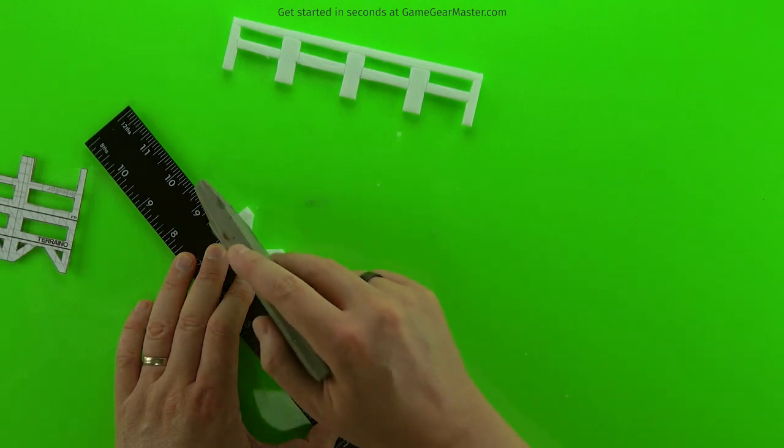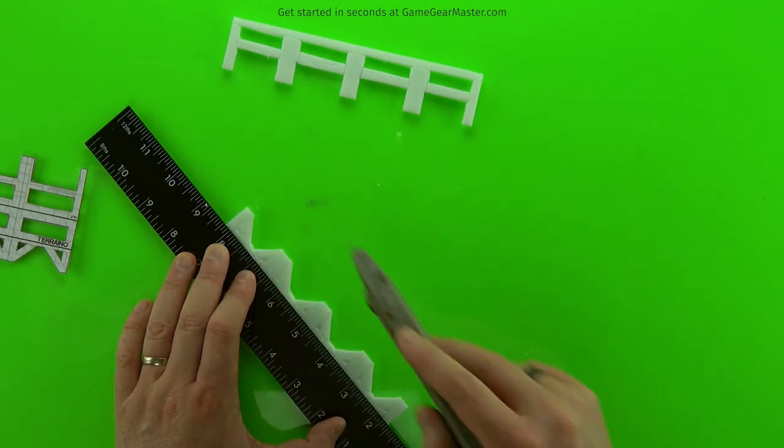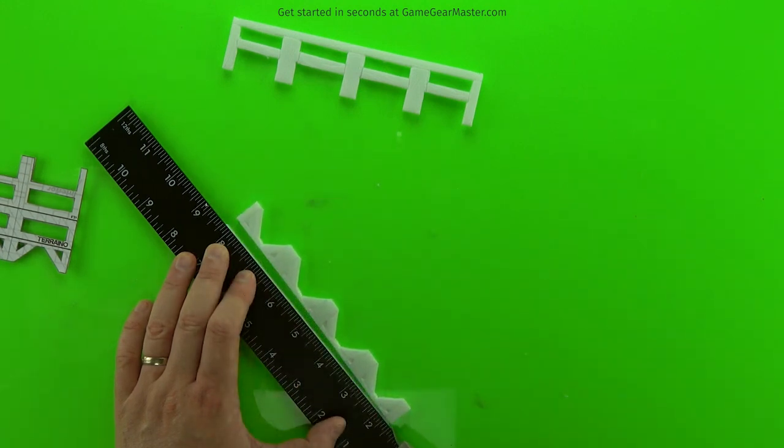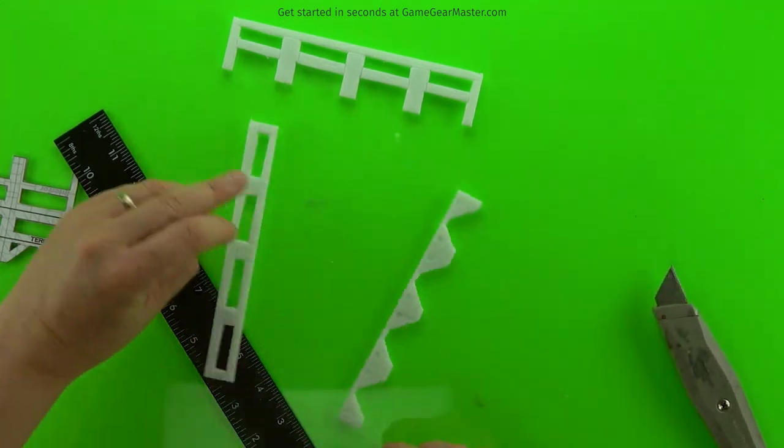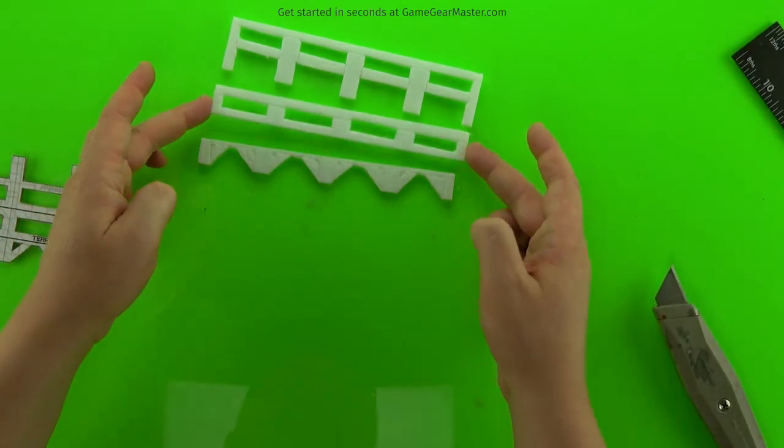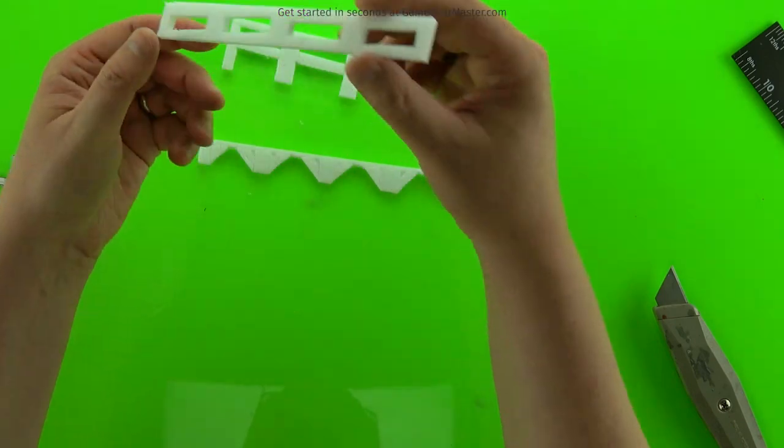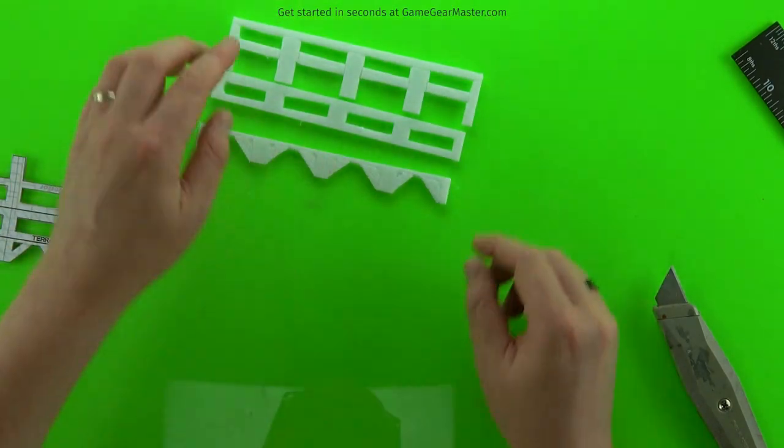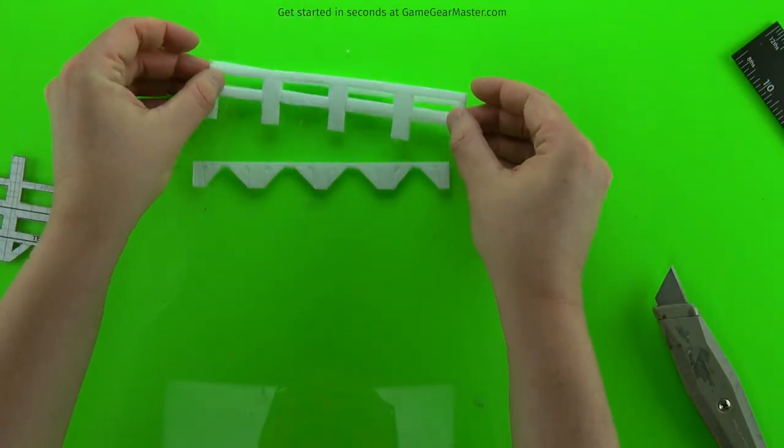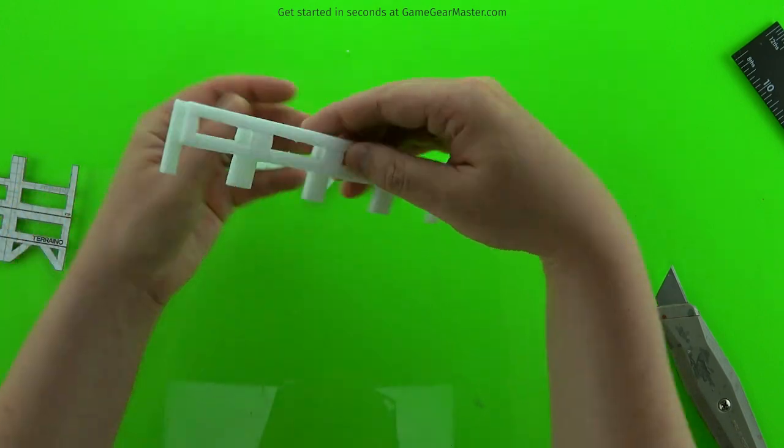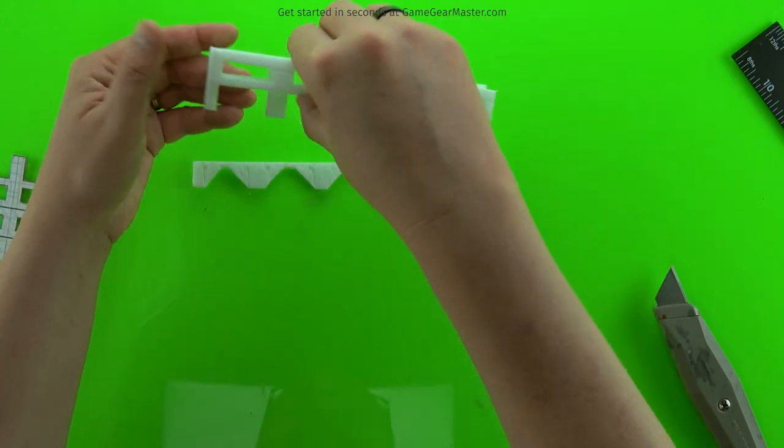Once you have your three components, we're going to use our work surface again to line up the piece of cardboard that we're going to glue to these three components. And just remember to turn over so the textures are in the right direction.